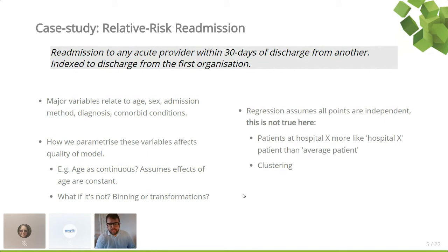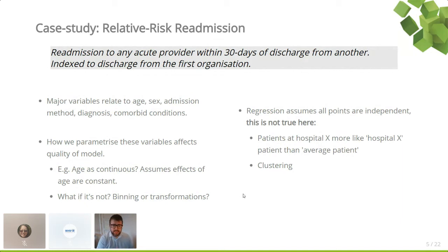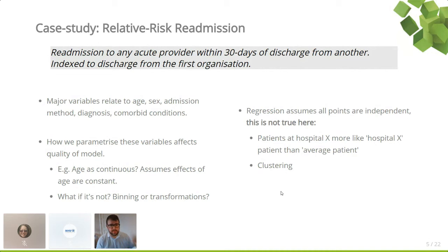A key point about building a regression model is that it essentially assumes all of your data points are independent — all patients with a given set of characteristics have exactly the same risk as all others with that characteristic. But it's not quite that simple. As Professor Mohammed and colleagues have said, there is a fallacy that because we have made a case mix adjustment, there are no longer any effects of case mix. What we've done is adjusted for the average effects. We also have clustering: a particular patient being treated in one health economy will always be a little more like patients in that health economy than the national average — just as in clinical trials where recruitment centres create clusters.